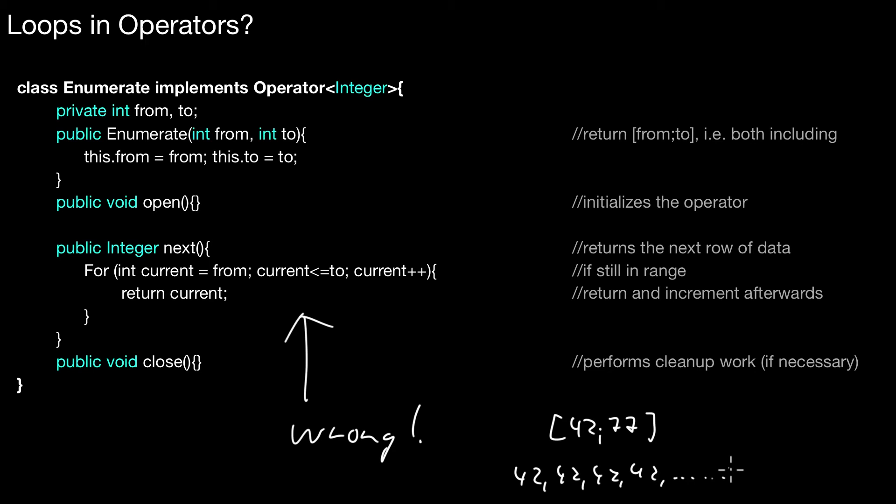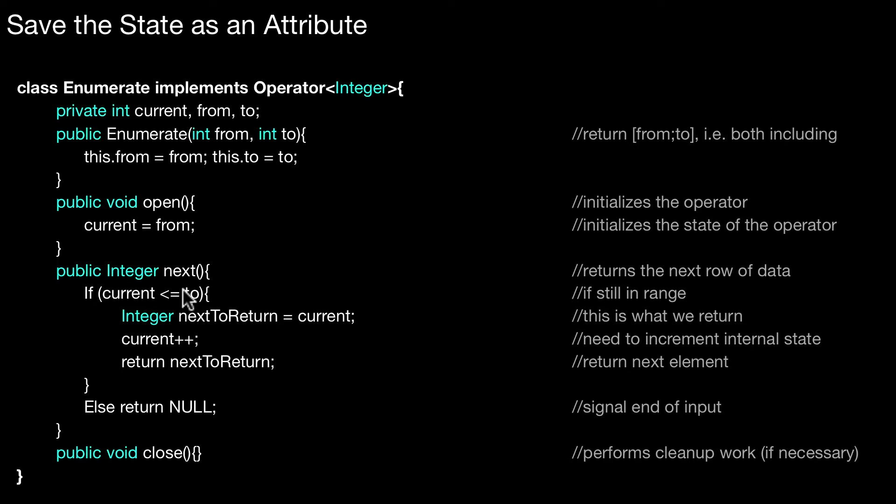In these kinds of situations, it's important to keep the state used in the loop as part of the class, the outside class. This should be an attribute, this should be the state. How that works is shown here. This is the correct way of doing it.